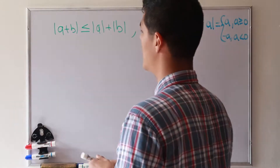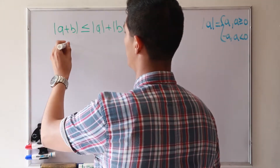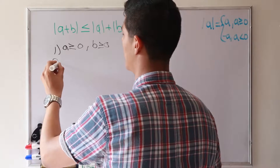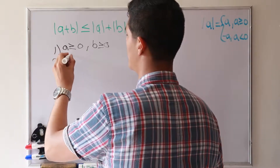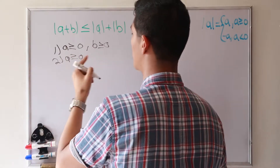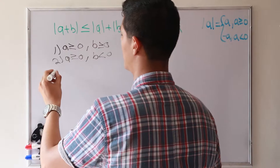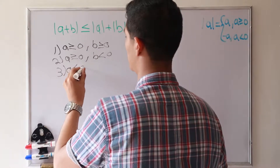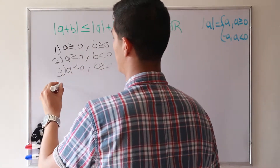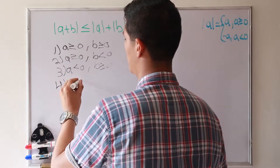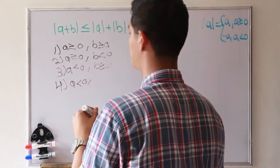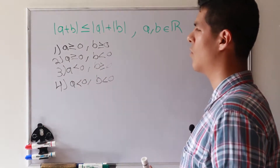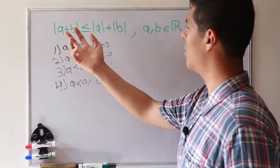So we have two different cases to prove. Case one: a is greater than or equal to zero and b is also. Case two: a is greater than or equal to zero and b is less than zero. Case three is the opposite, and case four is when both are negative.